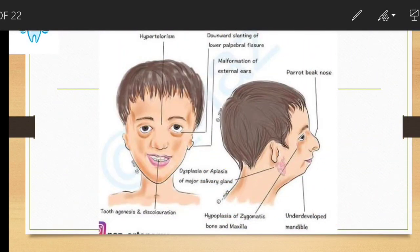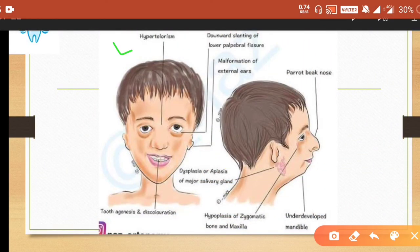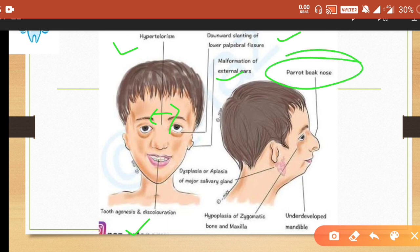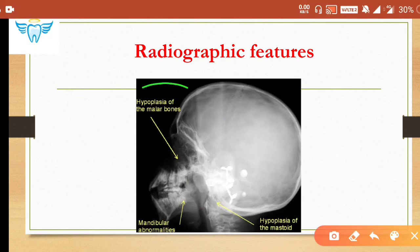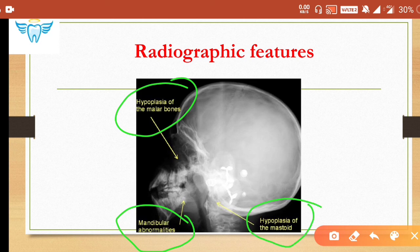Additional features include hypertelorism with increased distance between the two eyes, tooth agenesis and discoloration, downward slanting of the lower palpebral fissure, malformation of ears, parrot beak nose, underdeveloped mandible, and hypoplasia of the zygomatic bone and maxilla — these are the peculiarities of Treacher Collins syndrome. Radiographically, hypoplasia of the malar bones, mandibular abnormalities, and hypoplasia of the mastoid process are seen.